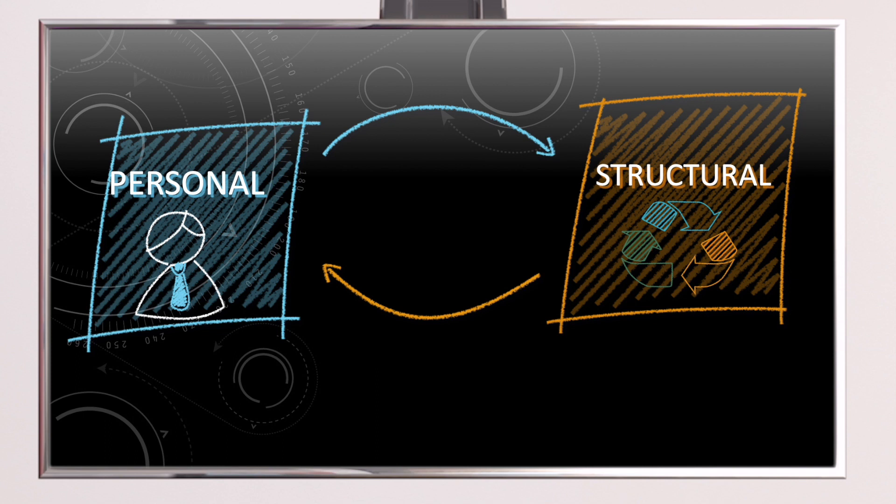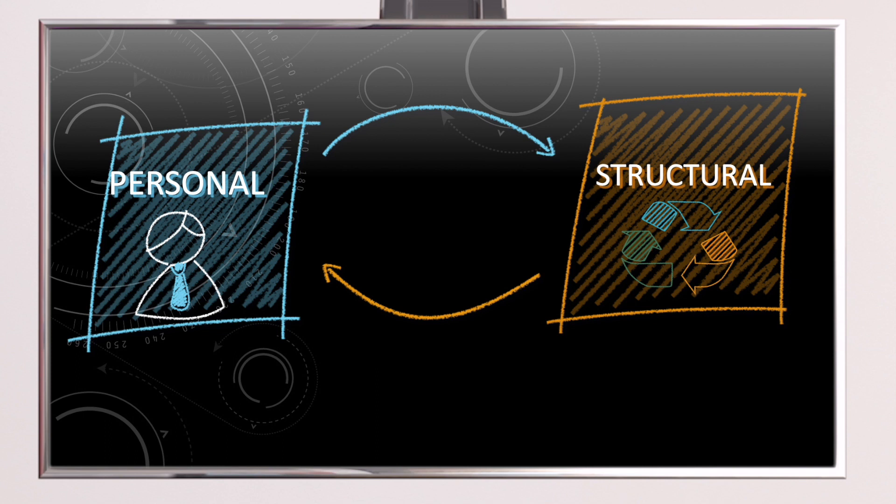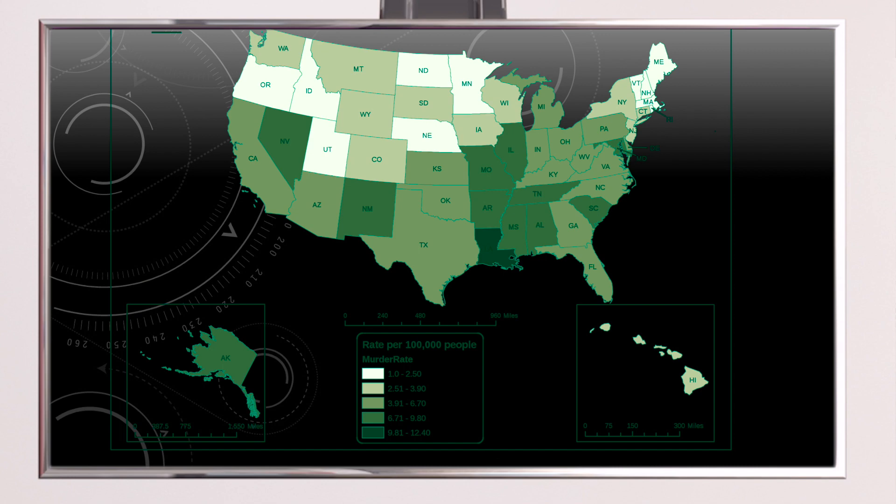And two, a structural component, basically how society shapes the behaviors of individuals. This explains, for instance, why there are large geographic variations in crime rates. In the US, for instance, the FBI data shows big differences from state to state and city to city. You can see here the contrast between states like Alaska and New Mexico and states like Maine, New Hampshire and Vermont.